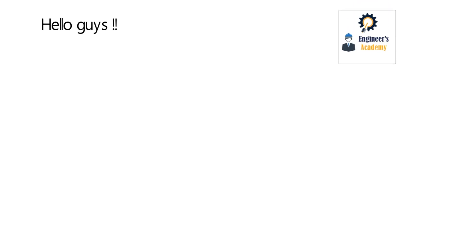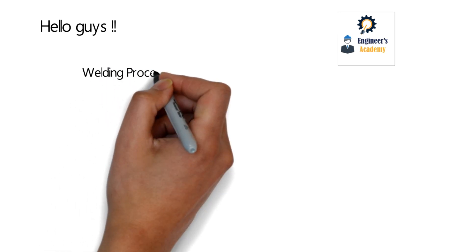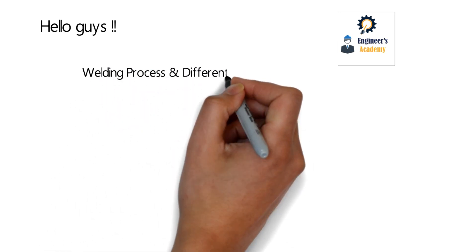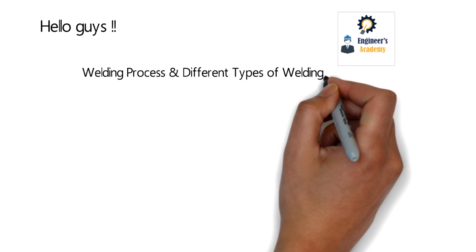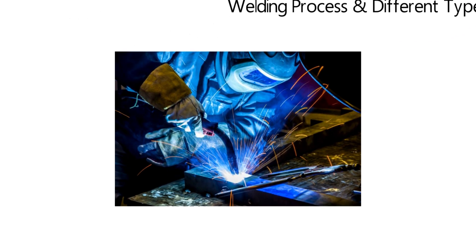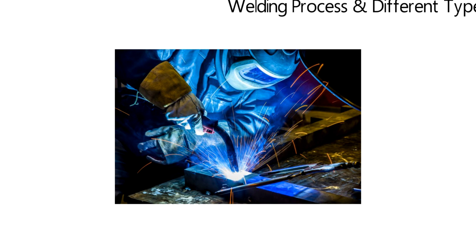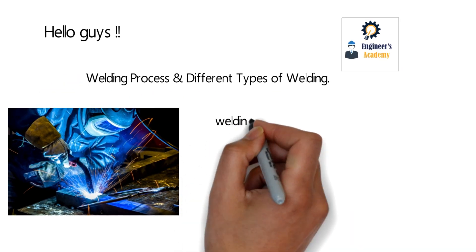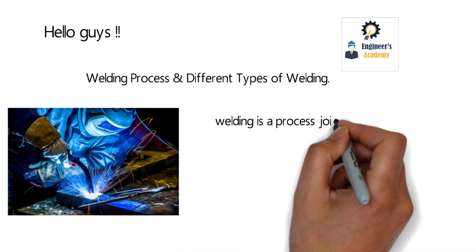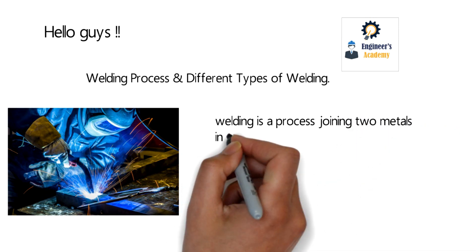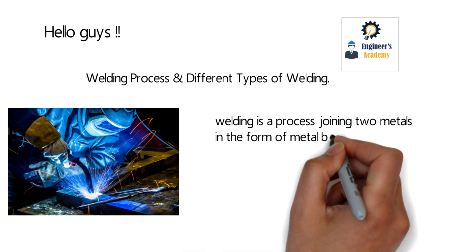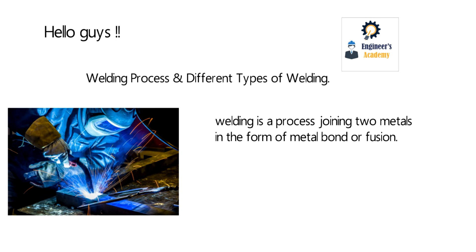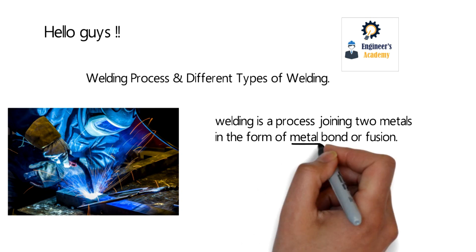Hello guys, welcome back to another video of Engineers Academy. In this video we are going to learn about the welding process and different types of welding. Welding is a process that is very widely used and adapted by a lot of industries, as it is the process of joining two metals in the form of a metal bond or fusion.